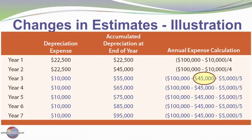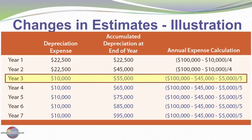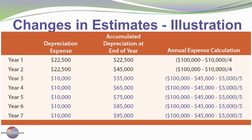The depreciation already taken is $45,000. So our cost of $100,000 minus $45,000 already taken leaves us $55,000 of remaining cost, $5,000 of which will be recovered through salvage value. Our calculation is $100,000 cost minus depreciation already taken minus remaining salvage value, spread over the remaining life of five years, giving us $10,000 per year for year three and beyond, boosting accumulated depreciation to $55,000.